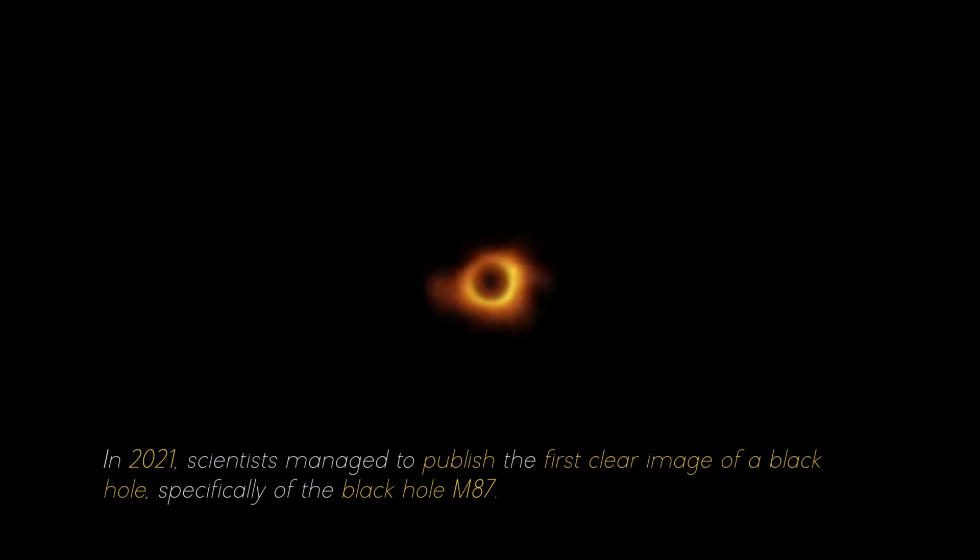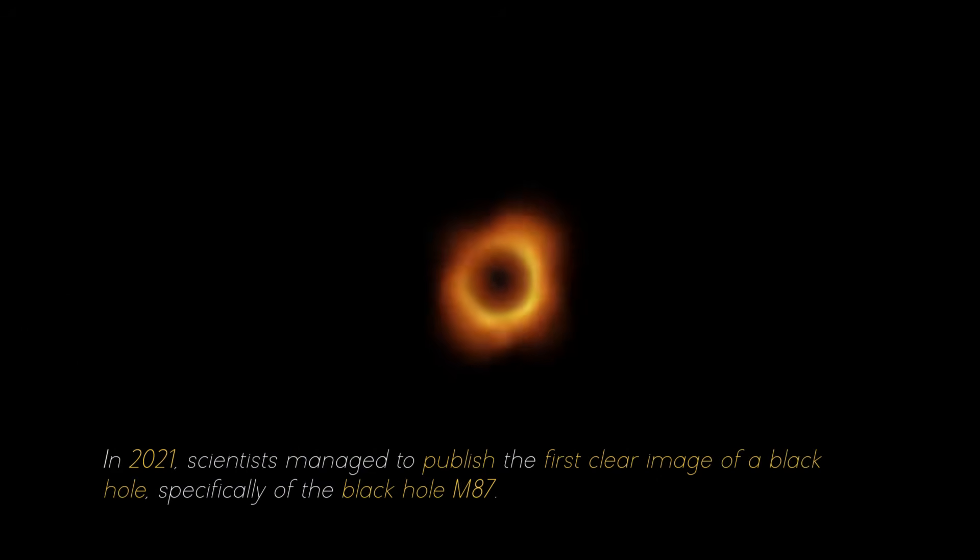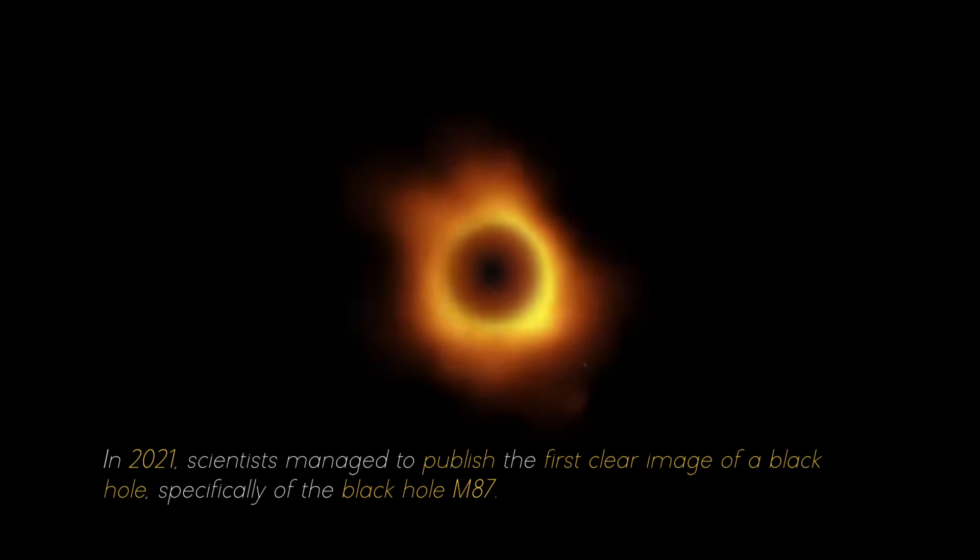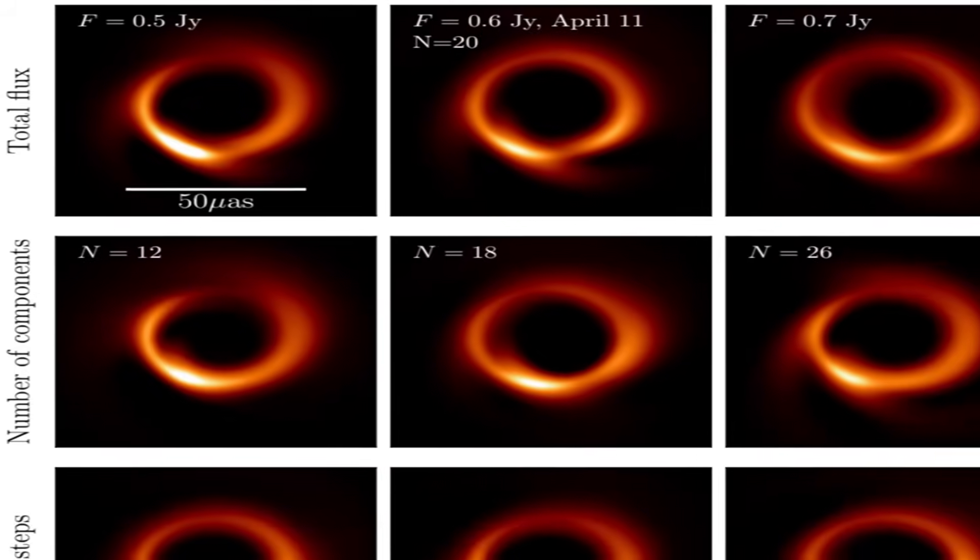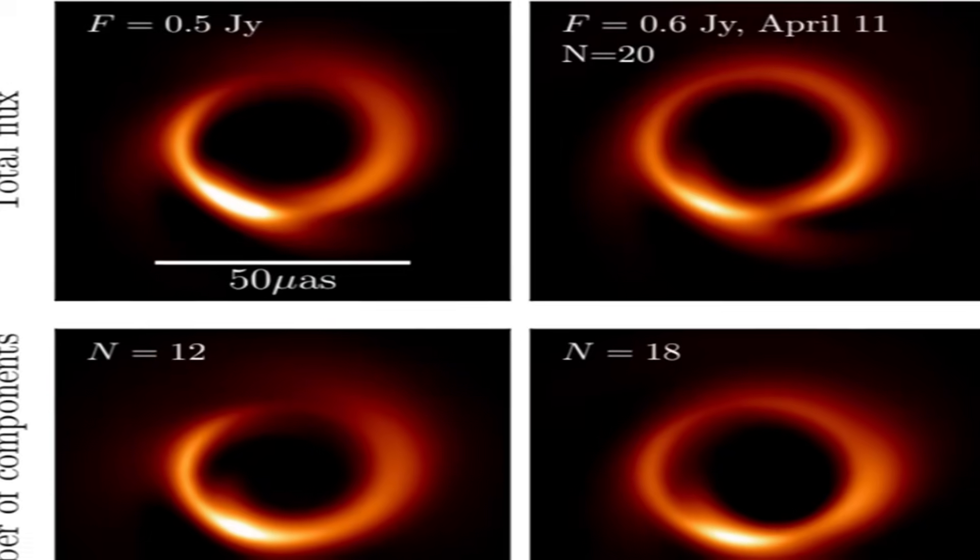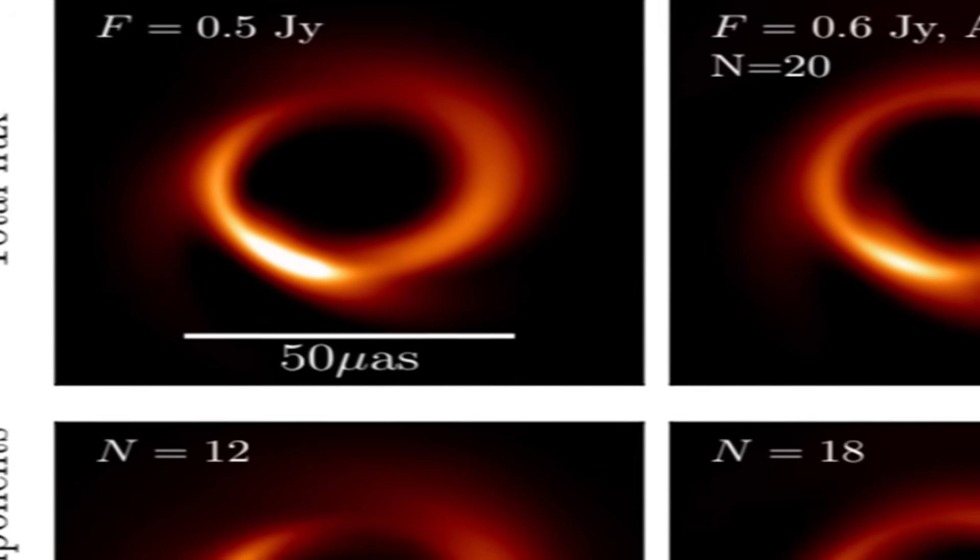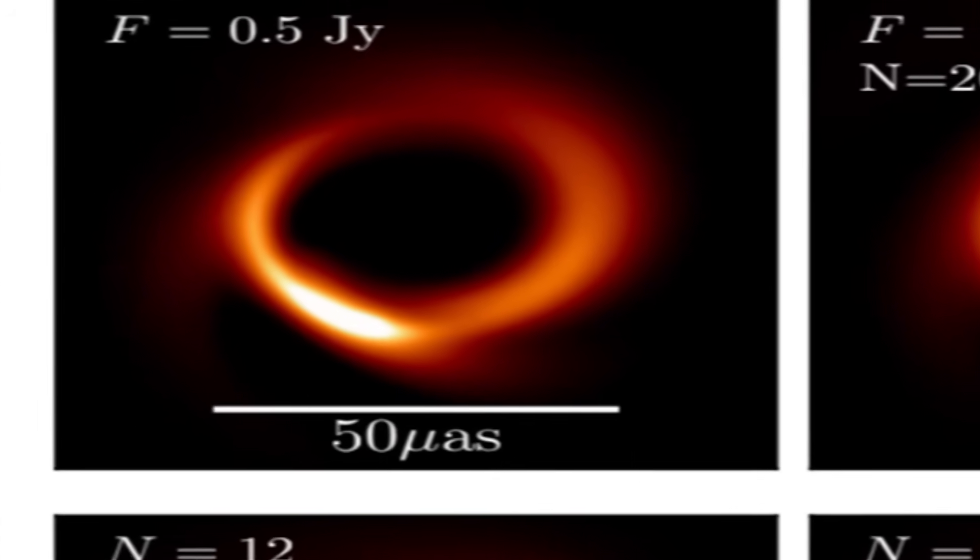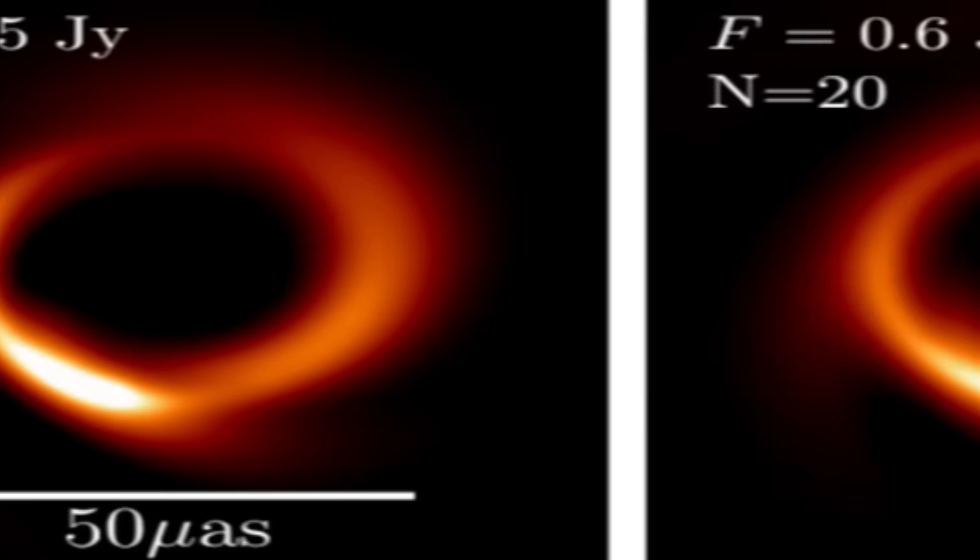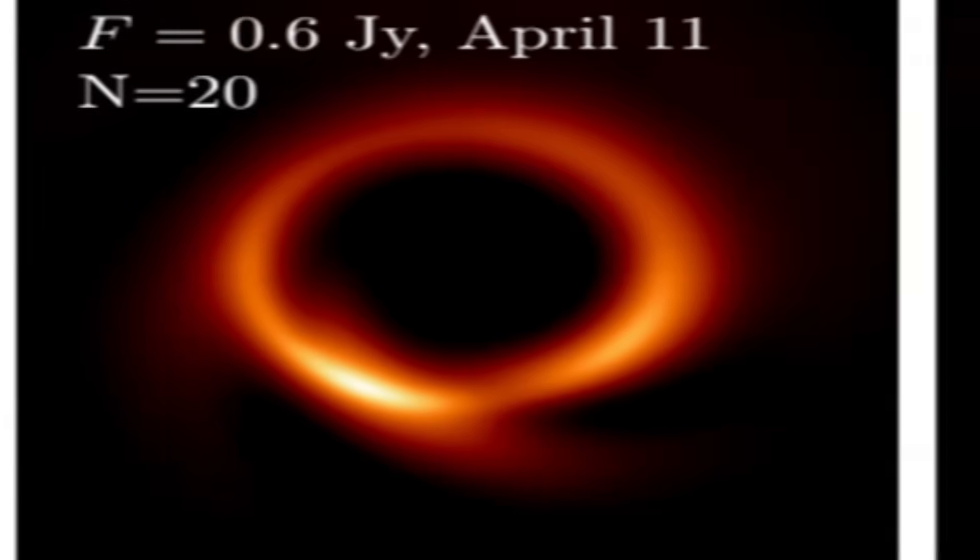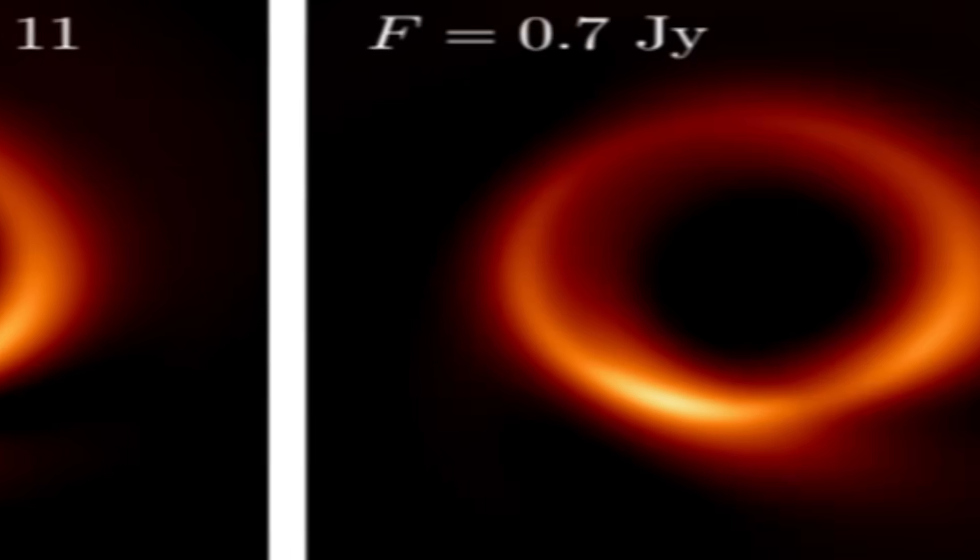In 2021, scientists managed to publish the first clear image of a black hole, specifically of the black hole M87. For several consecutive nights, photographs of the black hole were taken, and with each image researchers collected more evidence about it. It was necessary to combine the individual photographs to obtain a complete image that filled in all the gaps.